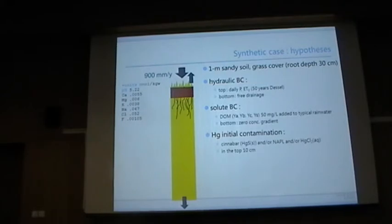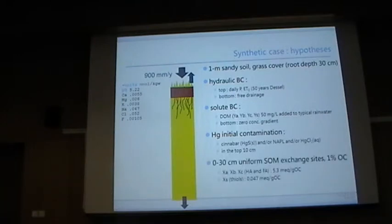We considered an initial mercury contamination in the top 10 cm, and we had it in three forms: either solid phase as cinnabar, either completely as NAPL or completely as dissolved mercury 2. Or we did combinations of these three sources. And then we had sorption sites of soil organic matter in the top 30 cm. Basically, all mercury which leached from this top 30 cm also reached to the groundwater because there is no sorption anymore. But we could extend this zone or make it shorter, so that's not really a big issue. And also dissolved organic matter can interact with the soil and we described it by a Langmuir constant.